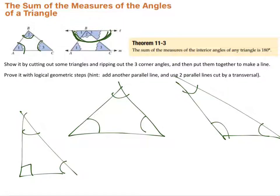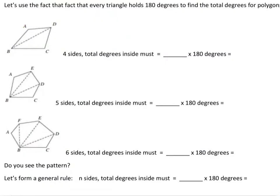So the three angles in any triangle total 180. We're going to get a lot of mileage out of that fact — we're going to take that one fact and run with it all the way to a perfect formula. This is a beautiful demonstration of how we can build far through logic.